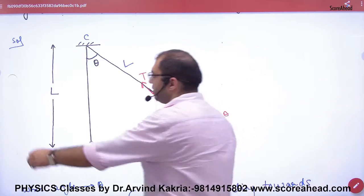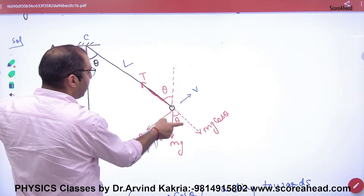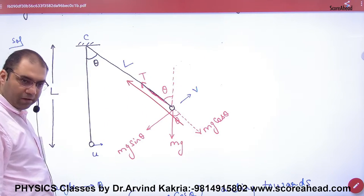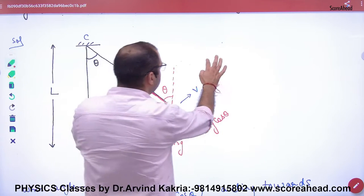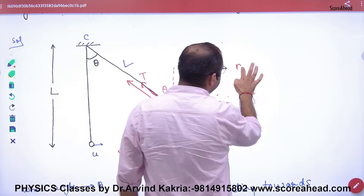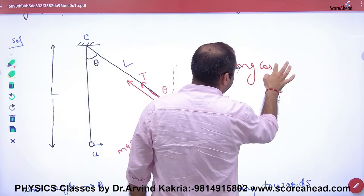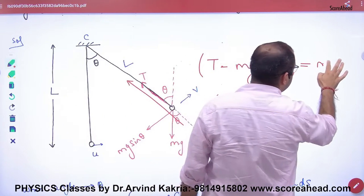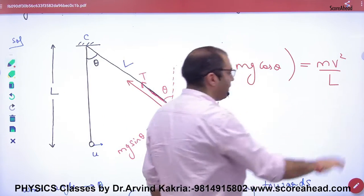Since it's circular motion, we need centripetal force toward the center. The centripetal force is T, and mg cos theta acts opposite. So the net force toward center is T minus mg cos theta equals mv² by L.